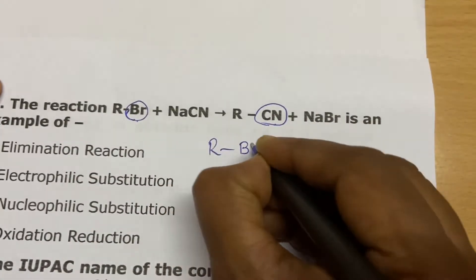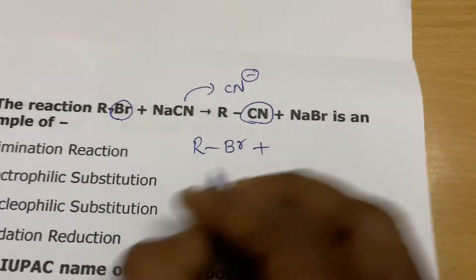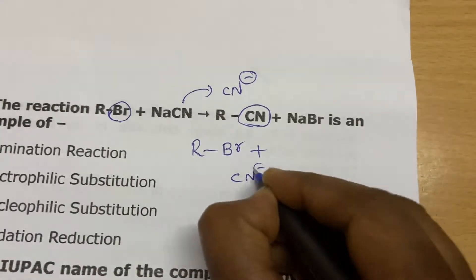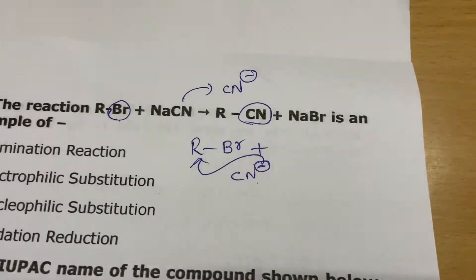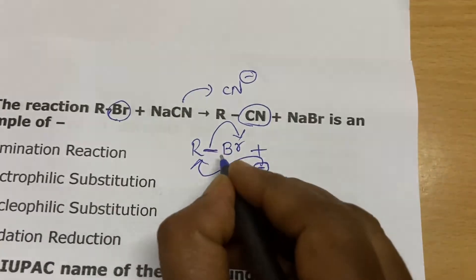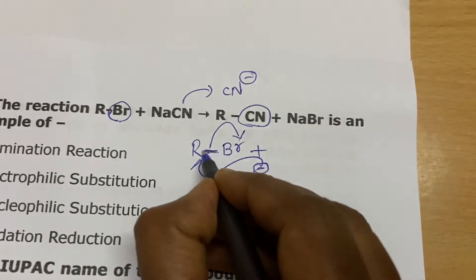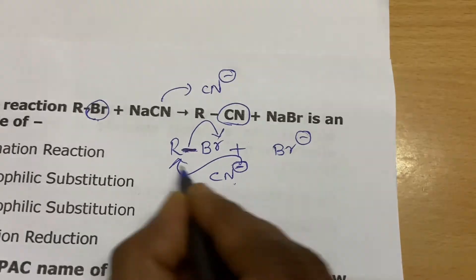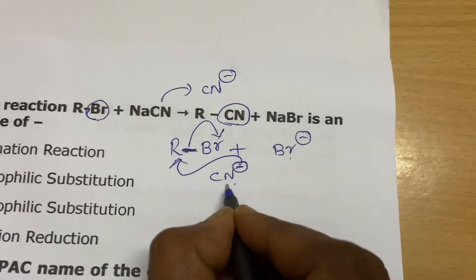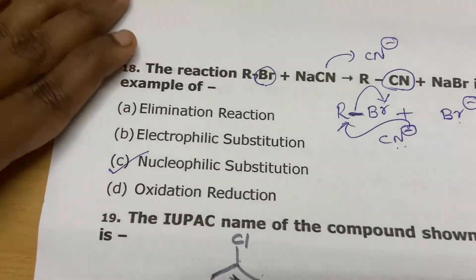NaCN is a source of CN minus. CN minus is a nucleophile. It will go and attack R, so bromine leaves taking the two electrons from the bond. A nucleophile enters and another nucleophile goes out — so this is a nucleophilic substitution reaction.